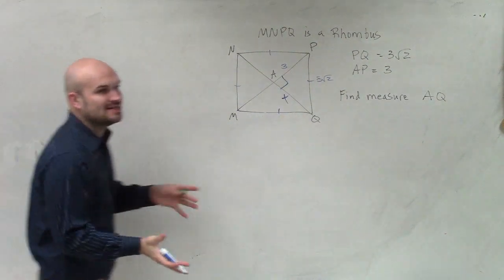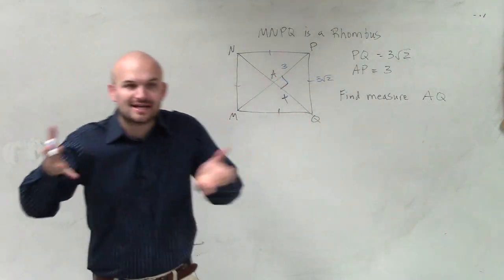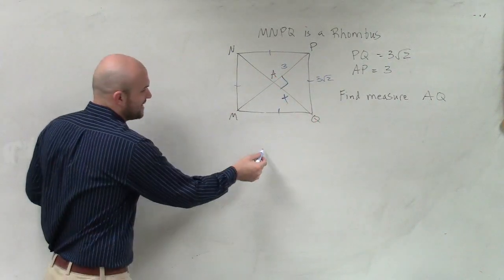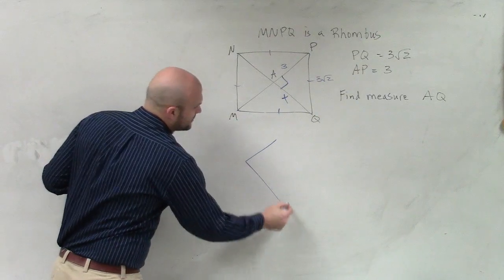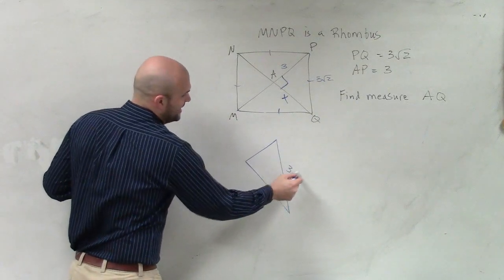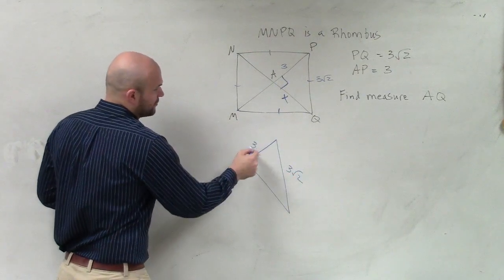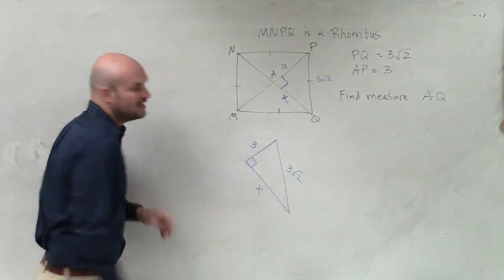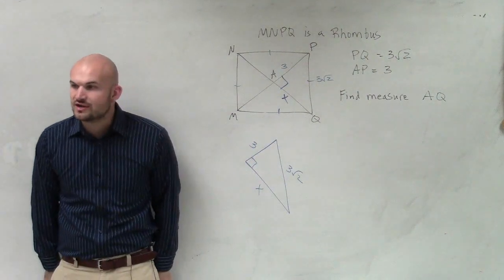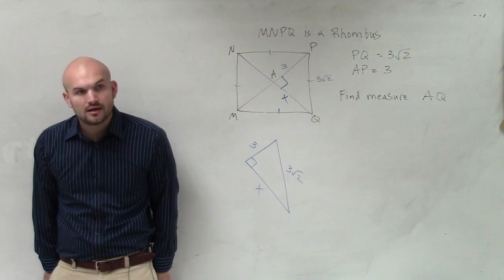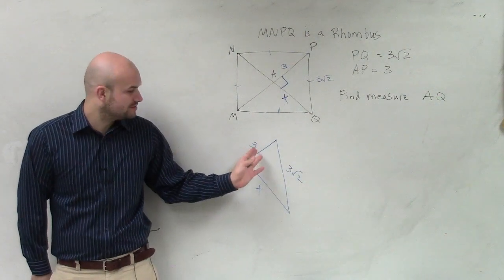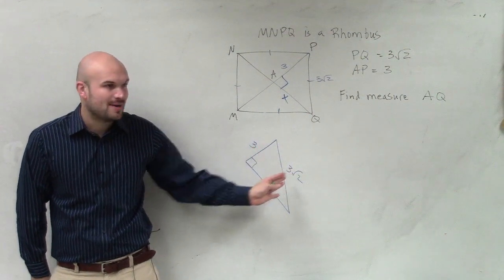So what I tell you guys is extract the triangle. Extract this, what you're trying to find. So here's what we have. 3 square root of 2, 3, x, right triangle. Is that enough information for us to apply the Pythagorean theorem? Yeah, of course it is. We have a leg and a hypotenuse.